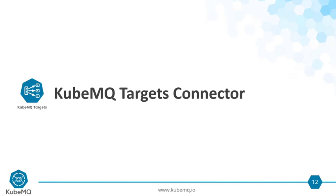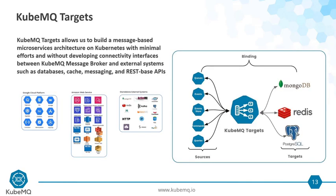Let's look at the first connector of the QubeMQ messaging framework — QubeMQ Targets. QubeMQ Targets enables building a message-based microservice architecture on Kubernetes with minimal effort, without developing connectivity interfaces between QubeMQ message workers and external systems such as databases, cache, messaging, and REST-based APIs. When building microservices on a messaging platform, you need interconnectivity between services — for example, an API reading from a database, saving to cache, or queuing data for later processing. QubeMQ Targets gives you this ability.